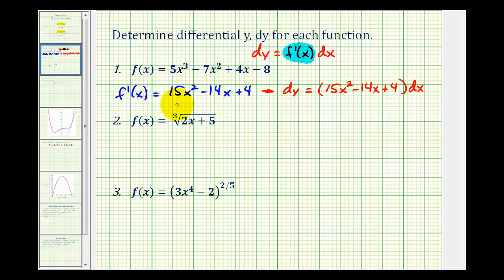So as you can see, it's a fairly straightforward process. Now in number two, we will have to apply the chain rule. Our inner function is 2x + 5. So we'll let that equal u and we can think of this as u to the one-third.